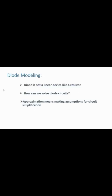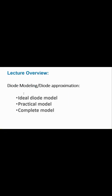We need diode modeling because a diode is not a linear device like a resistor. Solving diode circuits is not as simple as solving circuits for linear devices. We make assumptions for simplification, and these assumptions are called diode models or diode approximations. There are three types of models covered in this video.